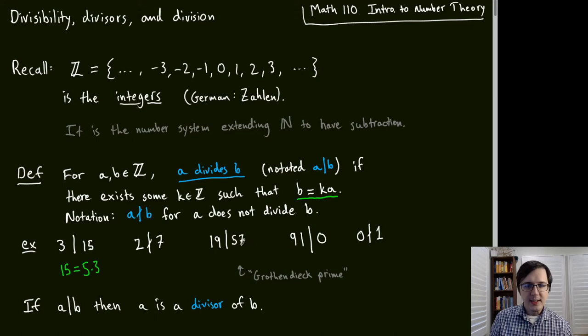57 = 19 × 3, so 19 does divide 57. This is known as the Grothendieck prime.